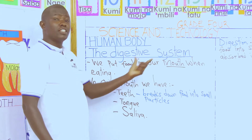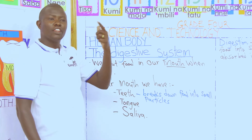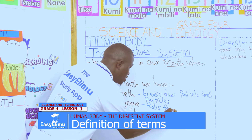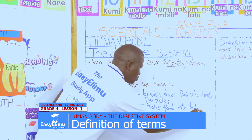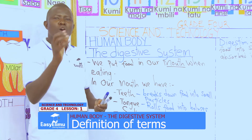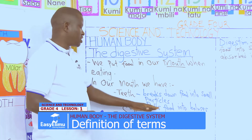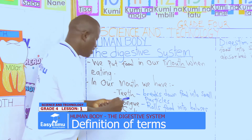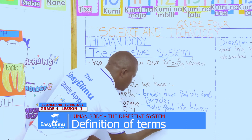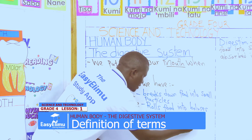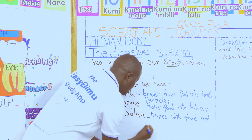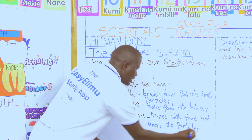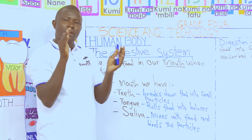Then we have the tongue. The tongue is also found inside the mouth and the work of the tongue is to roll the food. It rolls the food into balls — we call them boluses. And the work of the saliva is to mix with the food and compact it together, binding the particles together. That is the work of the saliva: to mix with the food and bind the particles together.